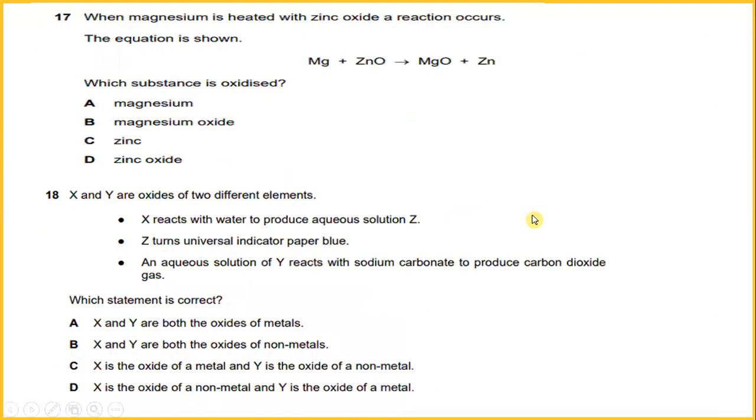When magnesium is heated with zinc oxide, a reaction occurs. The equation is shown. Magnesium will replace zinc and copper from their oxide. Which substance is oxidized? The answer would be magnesium.